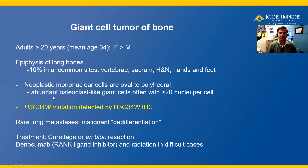Recently, a histone protein mutation at position G34W was detected, and an immunohistochemical surrogate was developed that can be very diagnostically useful for the diagnosis of giant cell tumor of bone. At this point it is both sensitive and specific for this tumor and is not seen in its mimics, namely chondroblastoma and aneurysmal bone cyst.